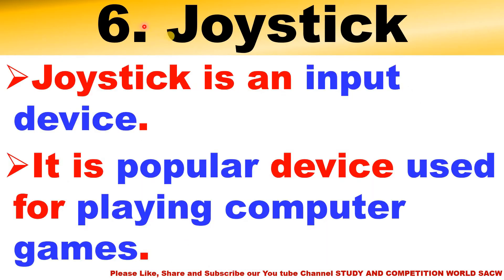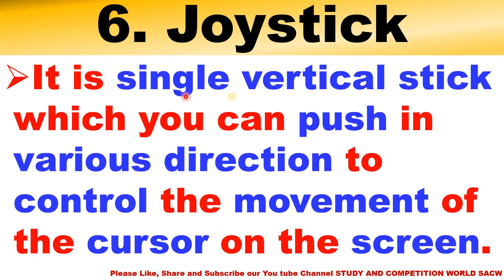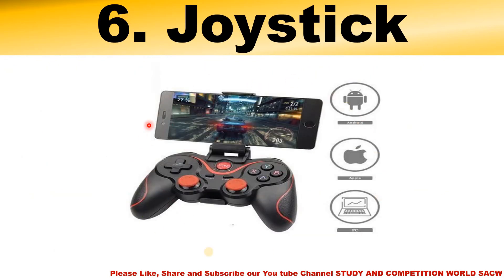Number six helping part of computer is joystick. Joystick is an input device. It is a popular device used for playing computer games. It is a single vertical stick which you can push in various directions to control the movement of the cursor on the screen. This is the image of a joystick - you use it when you play games on a computer.